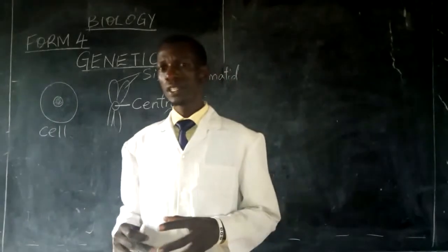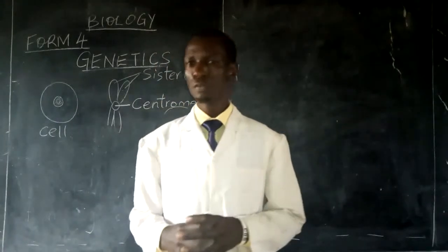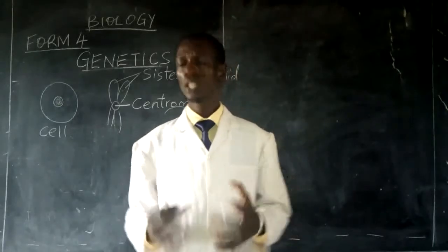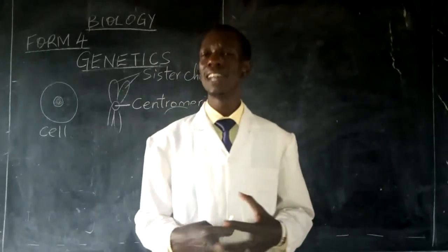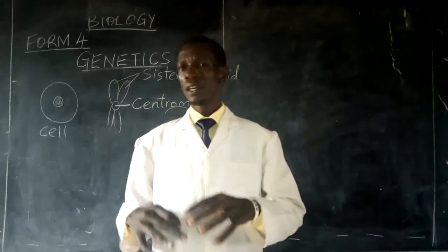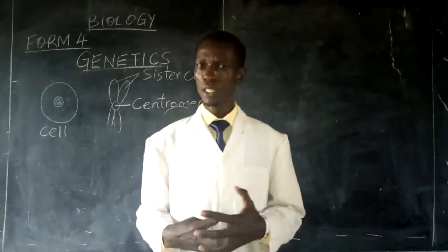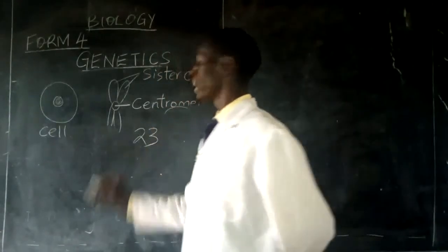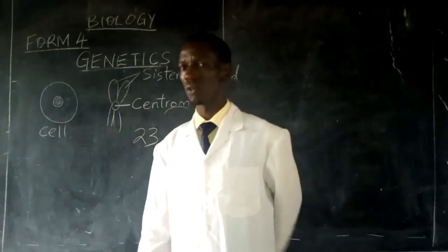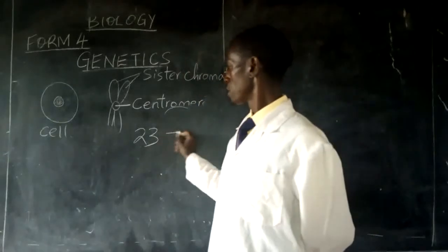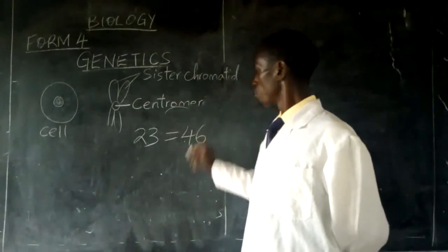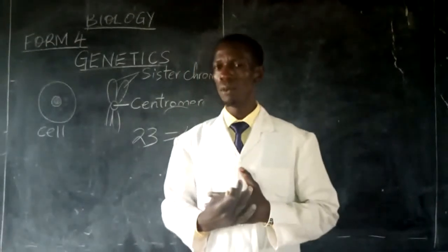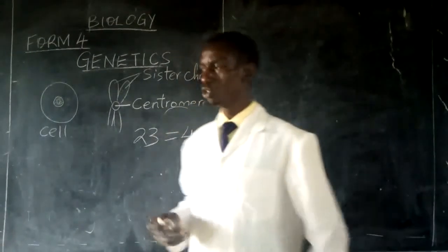Different animals have different numbers of chromosomes in their cells. In human beings, we have 23 pairs of homologous chromosomes. Therefore, if somebody says that we have 46 chromosomes within each cell in our bodies, that will be absolutely true.